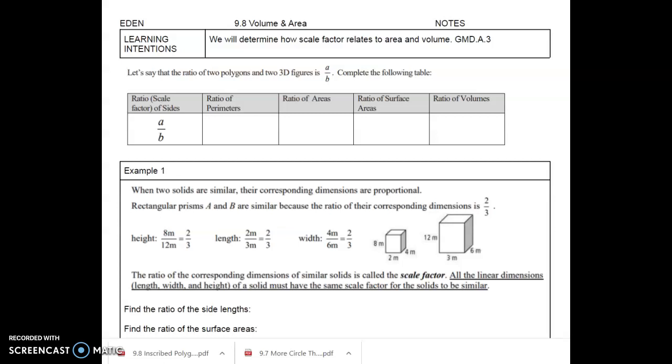Okay, so the last section in Unit 9 is 9.8, which is volume and area related to scale factor. So this has nothing to do with the circle theorems in Unit 9, but we're going to investigate how scale factor relates to area and volume and side lengths of different two-dimensional and three-dimensional shapes.